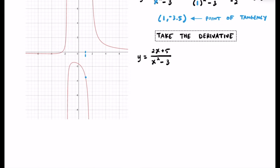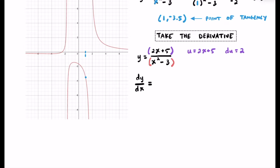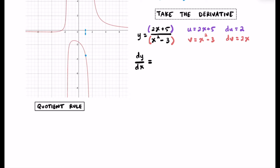To find the slope at that given point, we need to find the derivative of this equation. Taking dy/dx, we have a rational equation — a function divided by a function — so we'll use the quotient rule. Let u equal 2x plus 5, so du equals 2. Let v equal x squared minus 3, so dv equals 2x. The quotient rule is: v times du minus u times dv, all over v squared.